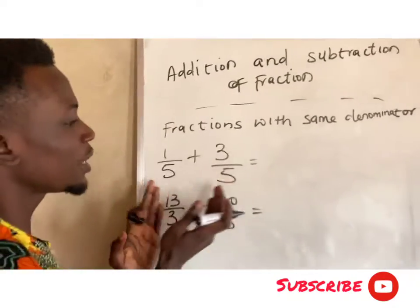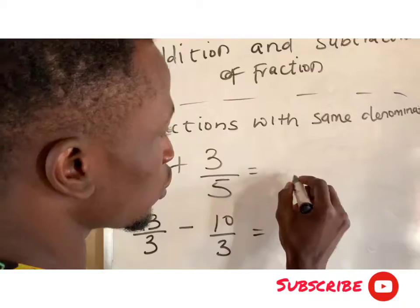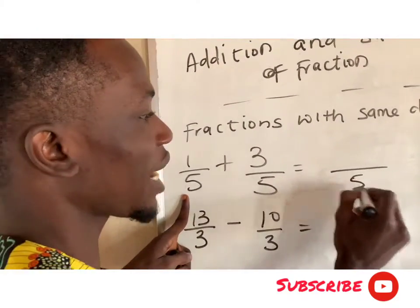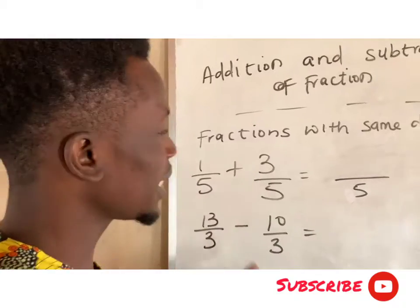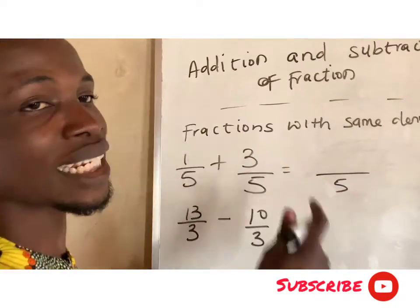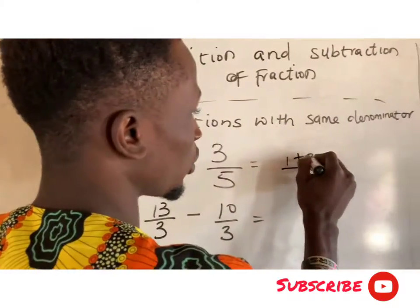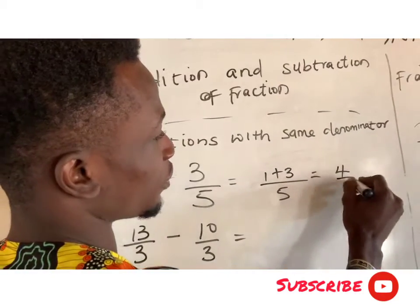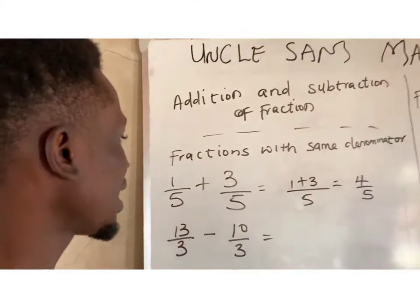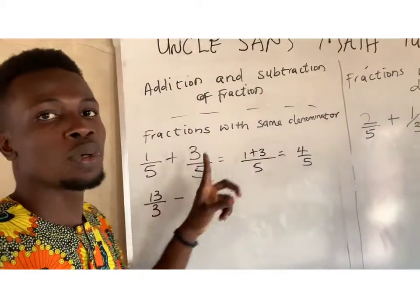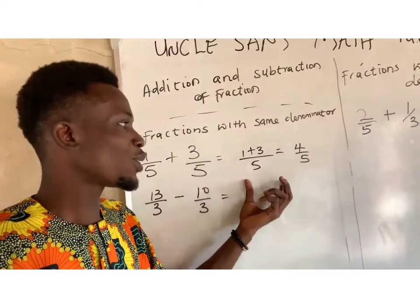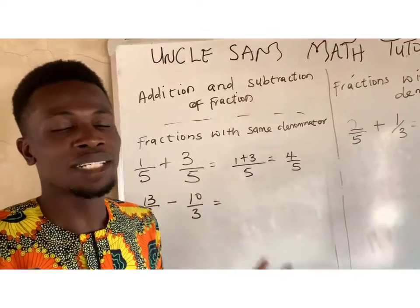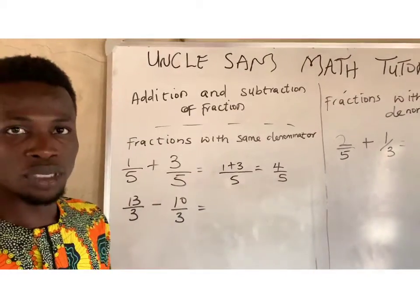What I will simply do here is write down the common denominator, which is 5, and then add the numerators: 1 plus 3, which gives us 4 over 5. So that means the addition of 1/5 and 3/5 is going to give us 4/5. That is the basic approach to adding fractions with the same denominator.